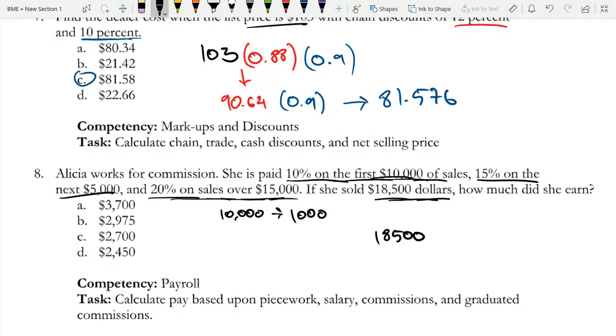Now on the next $5,000, so now we're at that $15,000 mark, right? She earned 15%. So 15% of $5,000, because she's earning 15% on the $5,000, is $750.